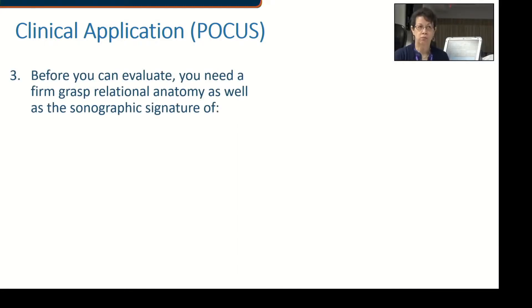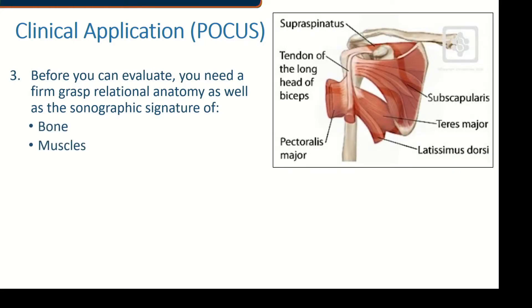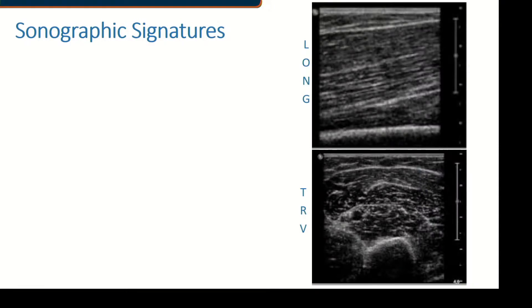Before you can evaluate, you want to have a firm grasp of the relational anatomy as well as the sonographic signatures of bone and muscle. You'll also want to recognize tendons, ligaments, and nerves. We'll go over skin and subcutaneous tissue last, because you want to be able to distinguish what layer you are in as you move from anterior to posterior. Let's begin with muscle and bone.